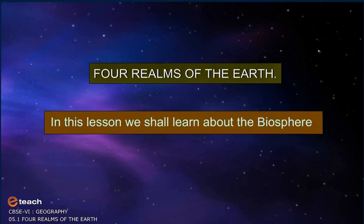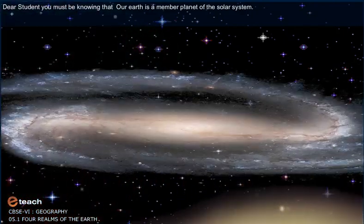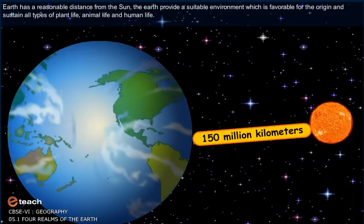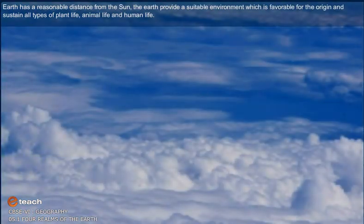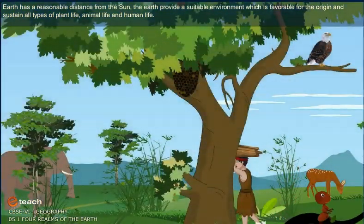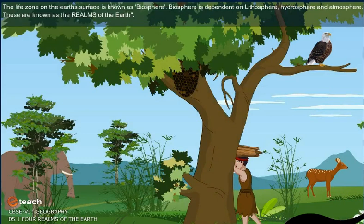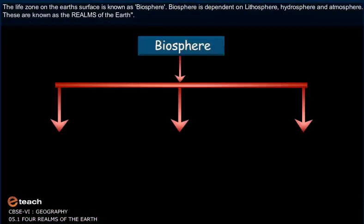In this lesson, we shall learn about the Biosphere. Dear students, you must be knowing that our Earth is a member planet of the solar system. Earth has a reasonable distance from the sun. The Earth provides a suitable environment which is favourable for the origin and sustaining all types of plant life, animal life, and human life. The life zone on the Earth's surface is known as Biosphere. Biosphere is dependent on Lithosphere, Hydrosphere, and Atmosphere.